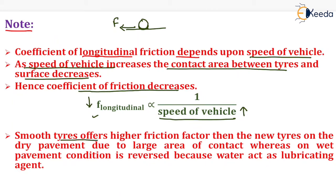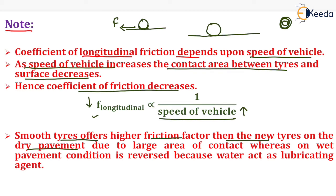Smooth tyres offer a higher friction factor than new tyres on dry pavement. During the dry season, when the road surface is also dry, smooth tyres generally offer a higher friction factor because the contact area between the smooth tyre and pavement is very large, giving a very large friction factor compared to new tyres. New tyres have corrugations, so only the corrugated parts are in contact with the pavement and the other surfaces are not — so friction factor is very less on dry pavement with new tyres.